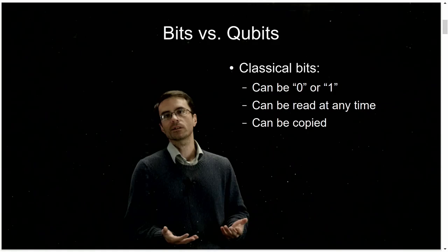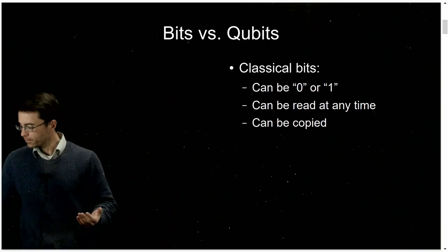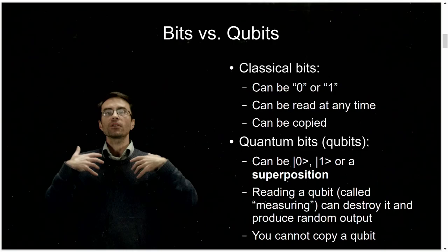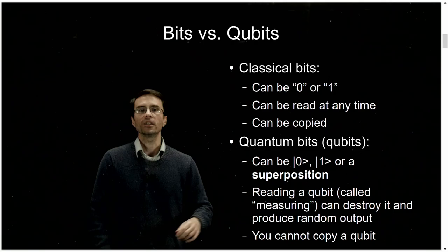I do work in quantum cryptography primarily, and that's involving quantum bits. Classical bits, we know, can be zeros and ones. You can read a classical bit at any time. You can copy classical bits. Quantum bits, or qubits, are very different. They can be zeros and ones, or they can be in a so-called superposition of both zero and ones.